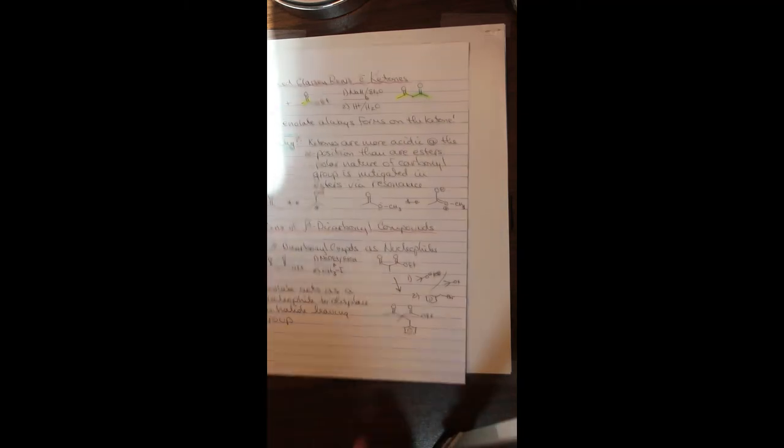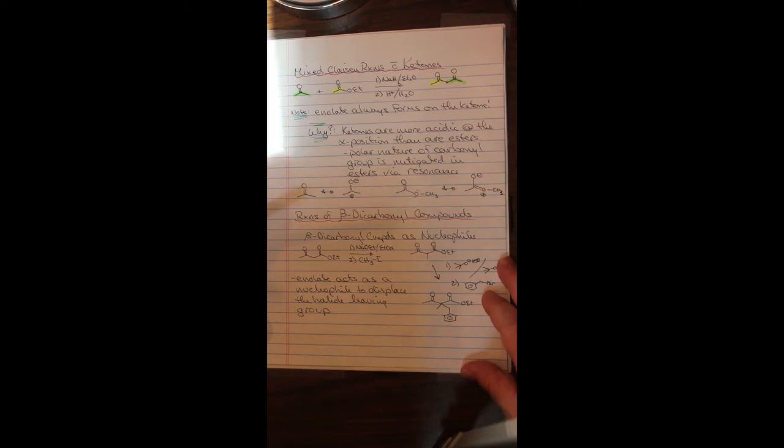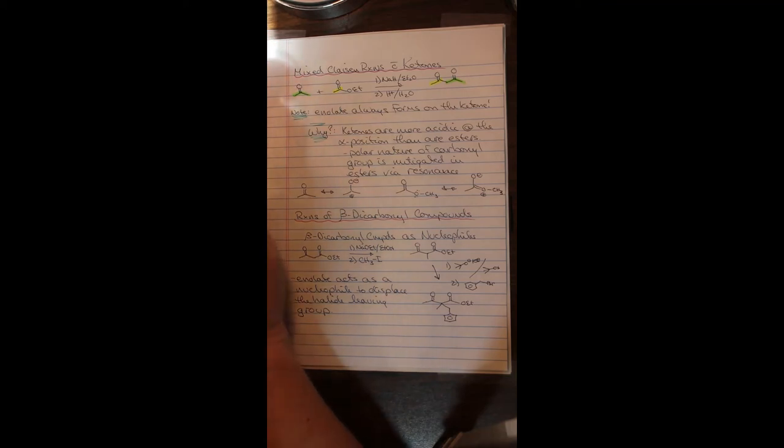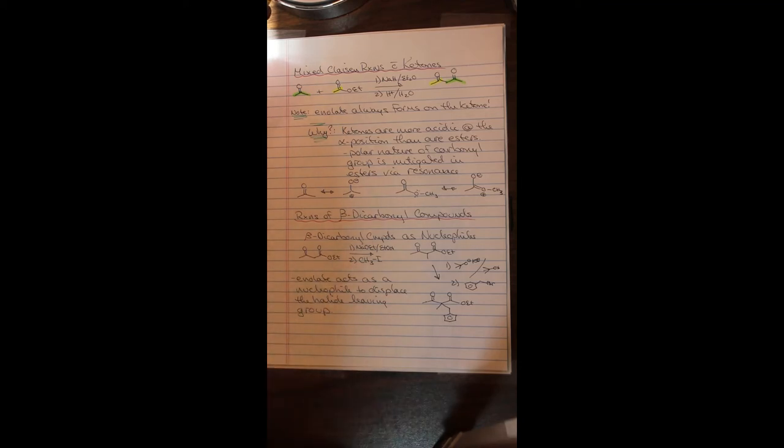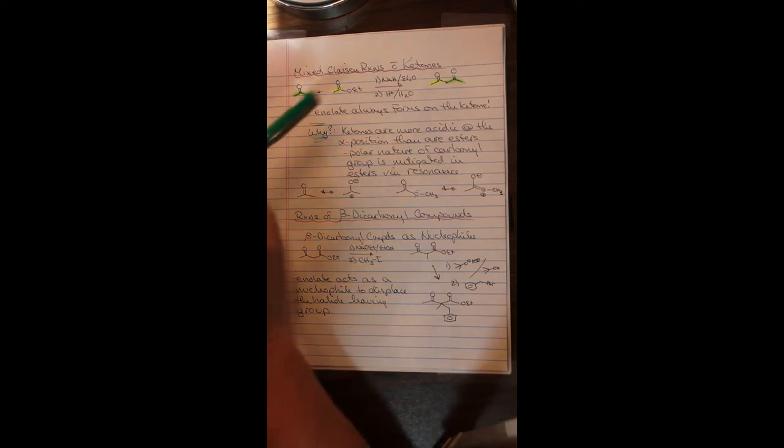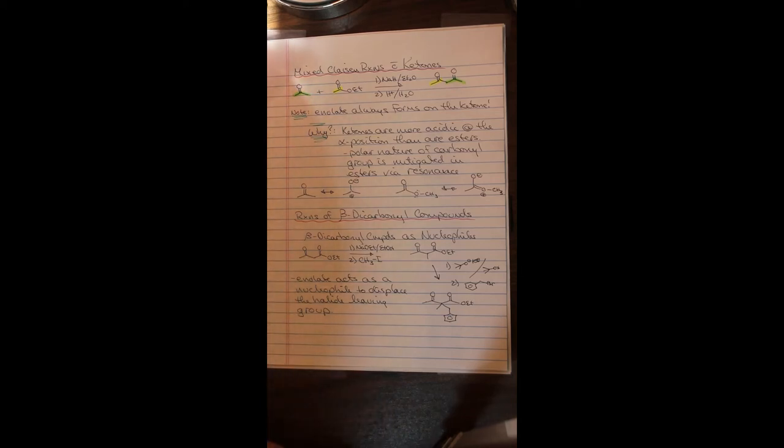We can also perform mixed Claisen reactions with ketones. So in this particular case, the sunlight in the corner was bothering me. We have acetone and we have our ethyl ethanoate, I guess. We're going to treat this with a slightly stronger base. And what we're going to find is that the enolate is always going to be generated on the ketone. Not a problem.